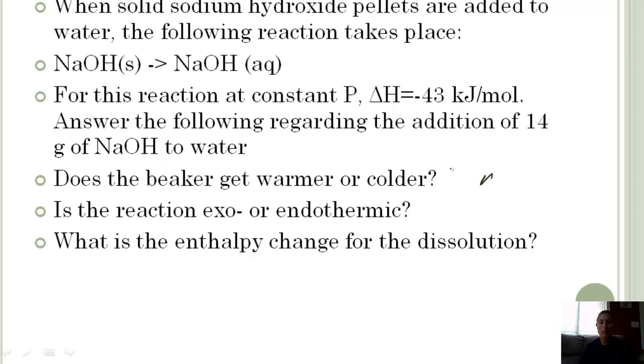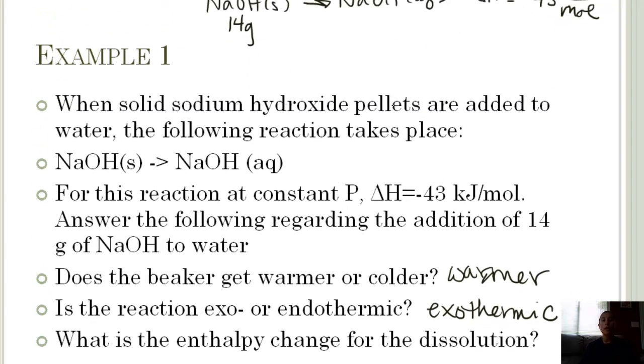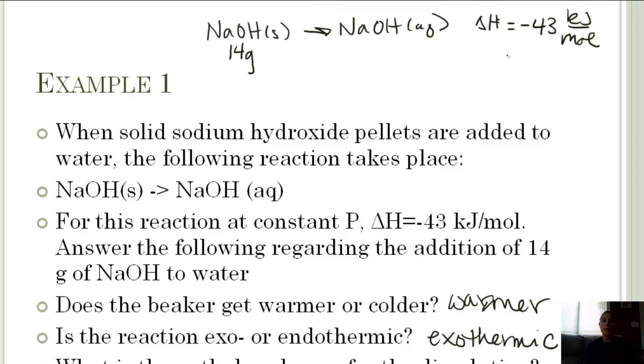So our beaker is warmer. Is the reaction exothermic? Because the delta H is negative, that makes it an exothermic reaction. Now we can answer the third part, which is about enthalpy change. We want to know how much heat is given off when we have 14 grams of NaOH.